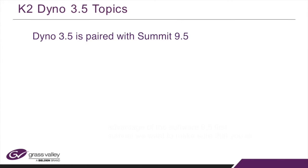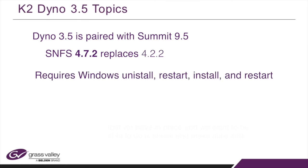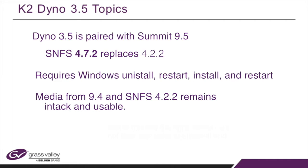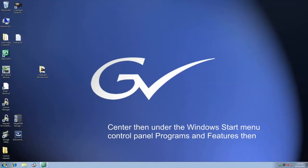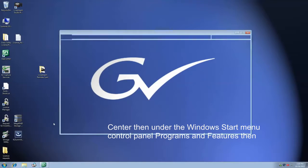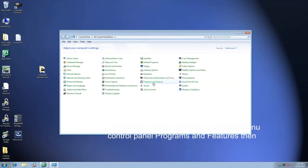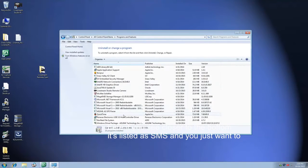In order to take full advantage of the software 9.5 for Summit, we want to make sure that you're using the correct version of SNFS — that is the file system management system we have in place. We want to check and make sure you're running the right version, and if not, you need to uninstall and reinstall. So we can minimize the App Center window, then under the Windows Start menu, Control Panel, Programs and Features, and here closer to the bottom it's listed as SNFS. You want to make sure you're running version 4.7.2 for this Summit 9.5 build.